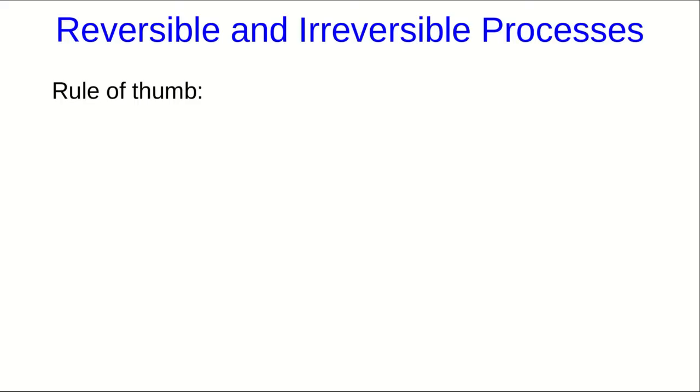The point here is that processes which are reversible generally are indistinguishable from their reverse processes. But there are other ways of telling, and so here are a few rules of thumb.